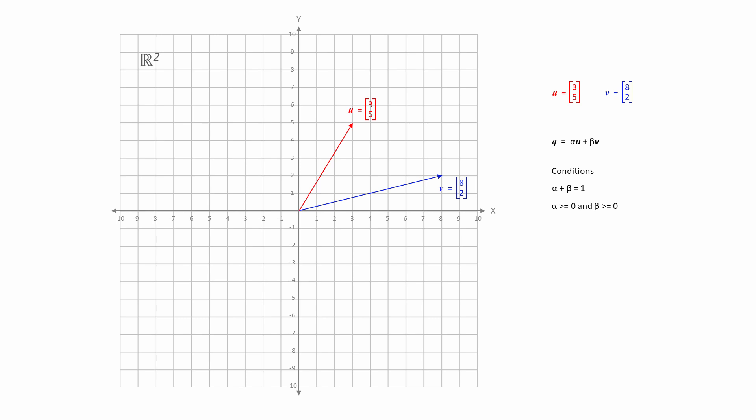Let's calculate a convex combination of these two vectors with coefficients of alpha equals 0.25 and beta equals 0.75. They add up to 1 and they are both bigger than 0. We can now substitute the vector coordinates and the coefficients into the equation. And when we perform the calculation, we produce a new vector q, the tip of which lies on the line segment connecting the tips of u and v.